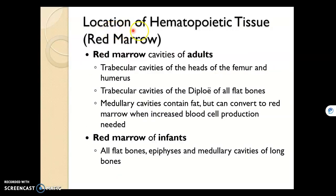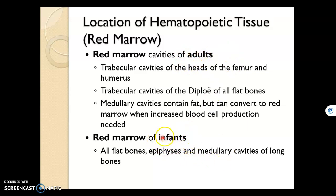Here's the location of hematopoietic tissue, that is red bone marrow. Recall red bone marrow is where our blood cells are produced in the body. In adults it will be different than in infants. Infants have to produce much more blood than adults, so there'll be a lot more red marrow in infants.